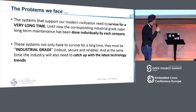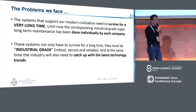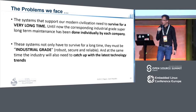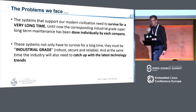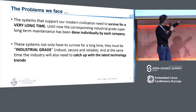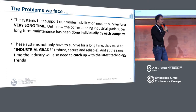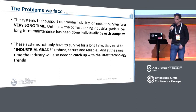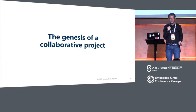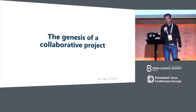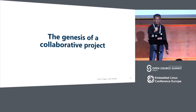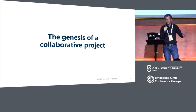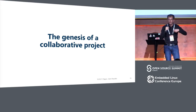Especially in industry, people are moving functionality down from the cloud to these devices, and it is very important currently to set up these devices in a sustainable way — otherwise the effort of maintaining these systems will kill us. The problems are summarized: we have to survive a very long time; we have industrial requirements — robustness, security, reliability. What we do in this project is nothing new because it was already done for years, but we did this in several companies each on its own, even multiple times for different products. And that's why we said it's time to change something.